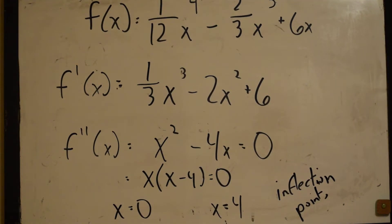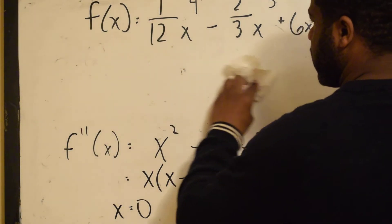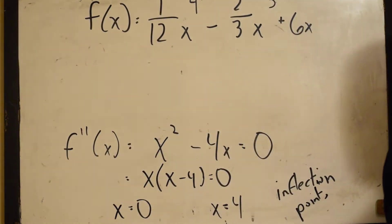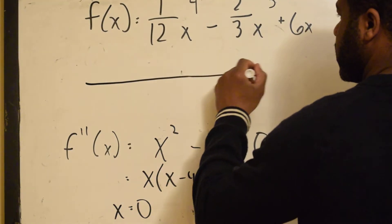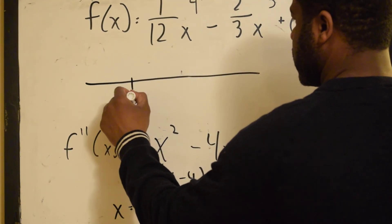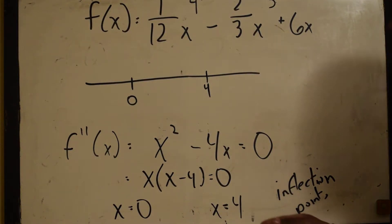Okay, so now, we have these inflection points. I'm moving up. We set up a number line. 0 and 4.